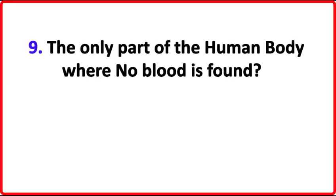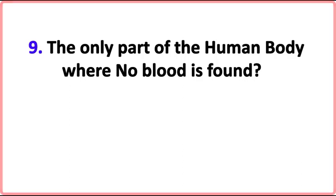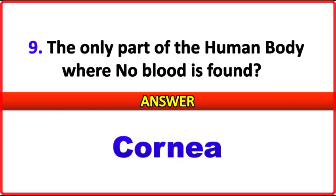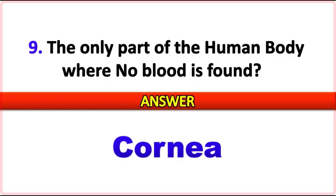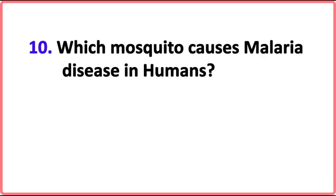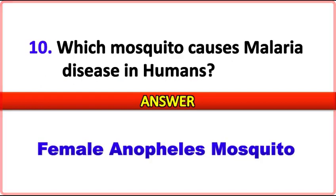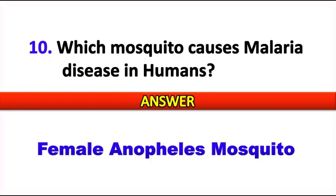The only part of the human body where no blood is found? Answer: Cornea, which is a part of the human eye. Which mosquito causes malaria disease in humans? Answer: Female Anopheles mosquito.